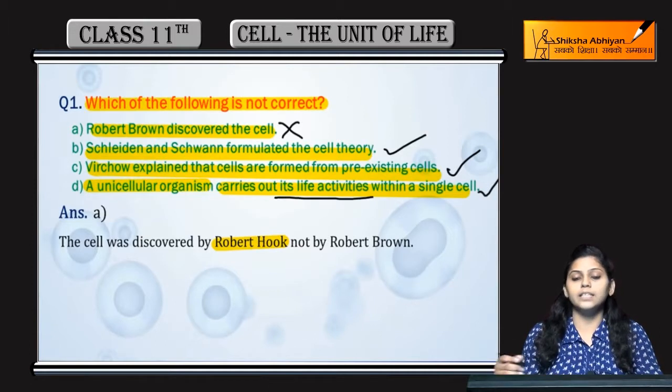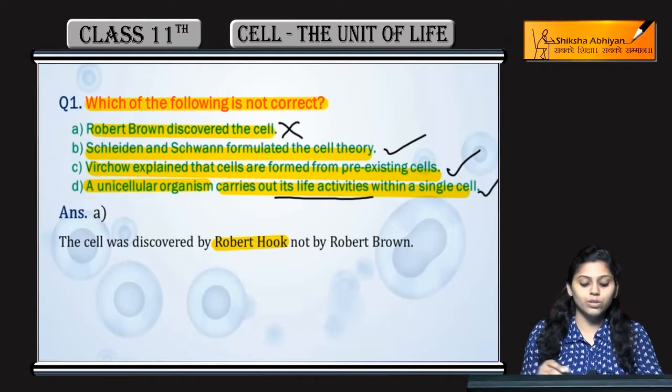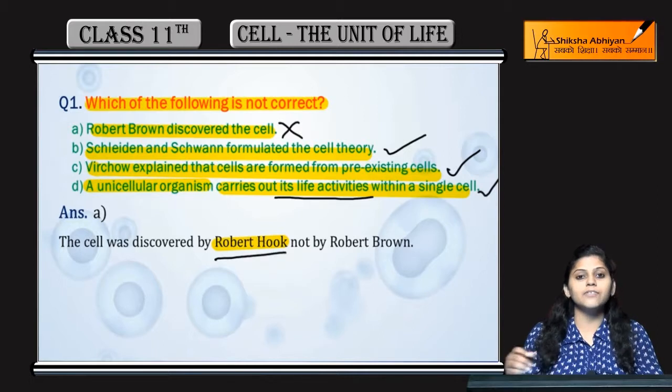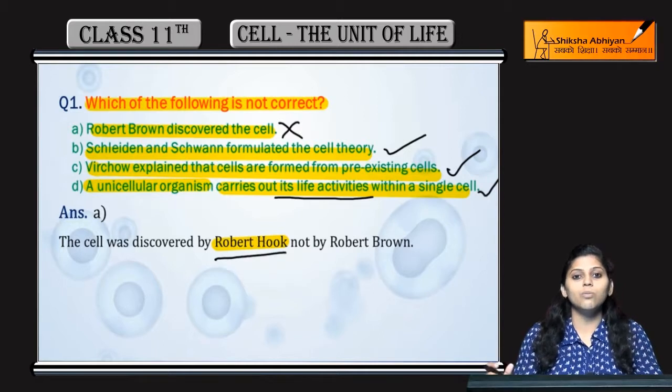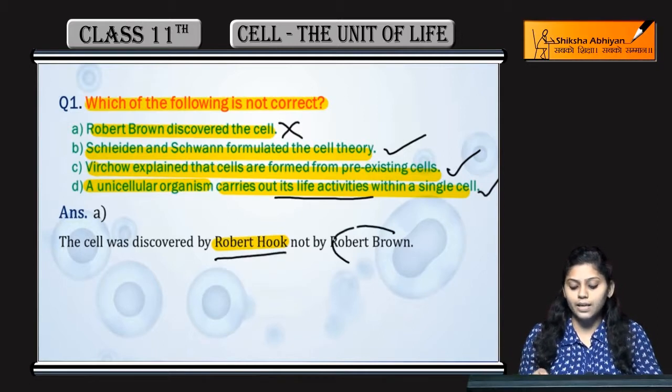So the incorrect statement was about cell discovery — cell discovery Robert Hooke ne ki thi, Robert Brown ne nahi ki thi.